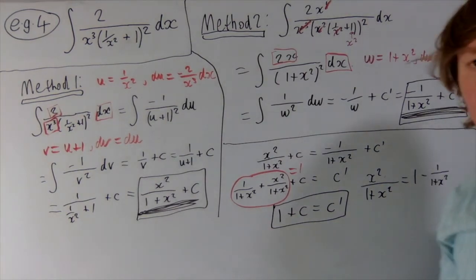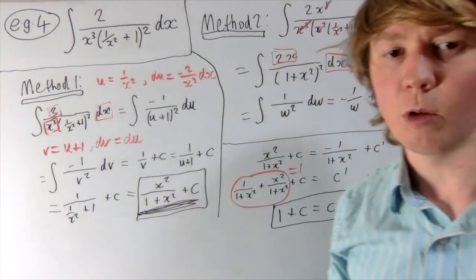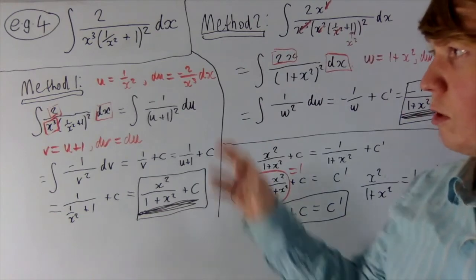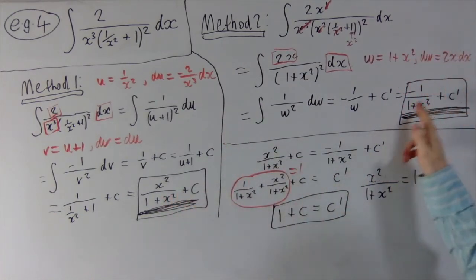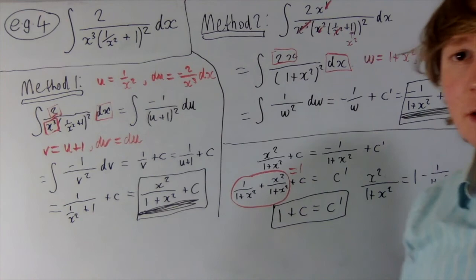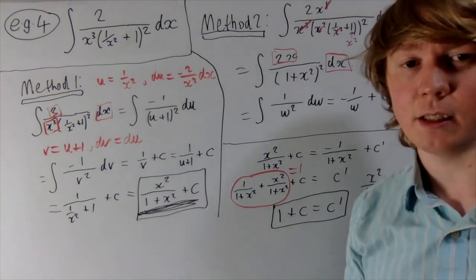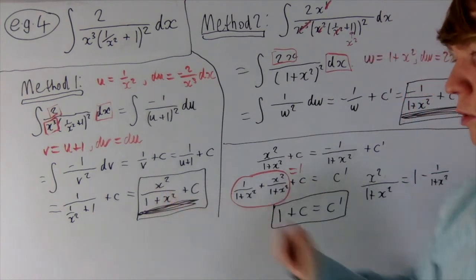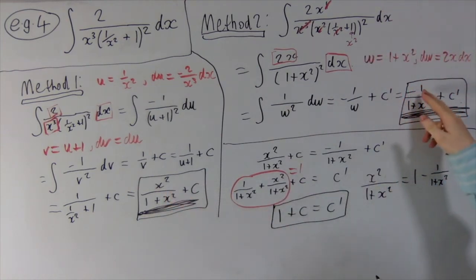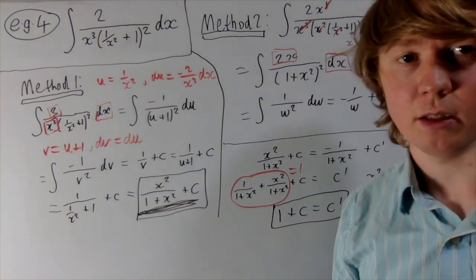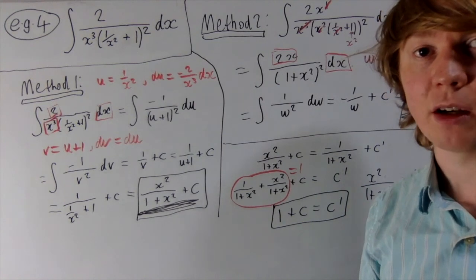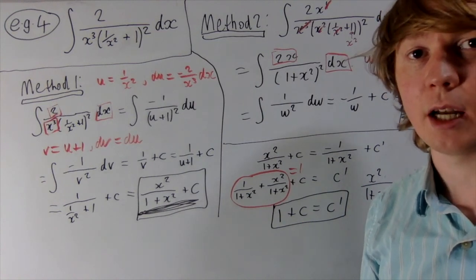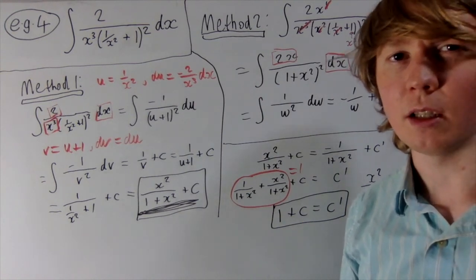So this is another really nice interesting example where you do the integral in two different ways and get two different functions, and then discover there's some kind of identity. So x squared over (1 + x²) is related to minus 1 over (1 + x²). If you do integration problems in different ways, you may uncover other identities that aren't immediately obvious.